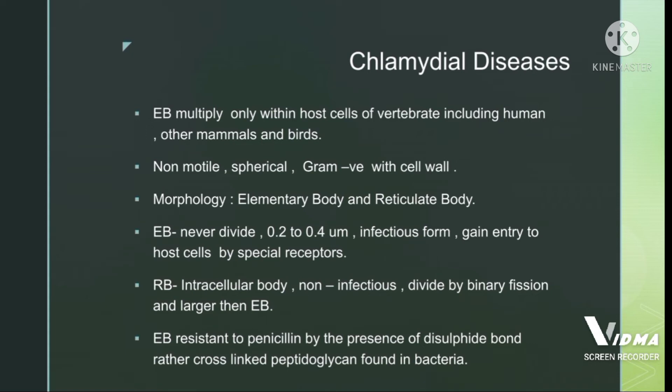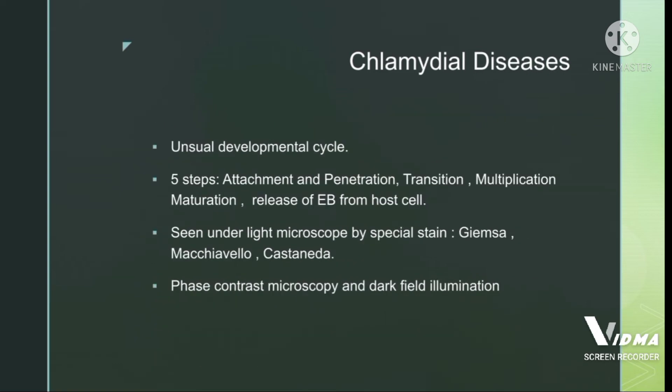The elementary body ranges from 0.2 to 0.4 micrometers and gains entry to the host cell via special receptors. The reticulate body, also known as the intracellular body, is non-infectious, divides by binary fission, and is larger than the elementary body. The elementary body is resistant to lysis due to the presence of disulfide bonds. The developmental cycle is unusual because it involves both elementary and reticulate bodies.